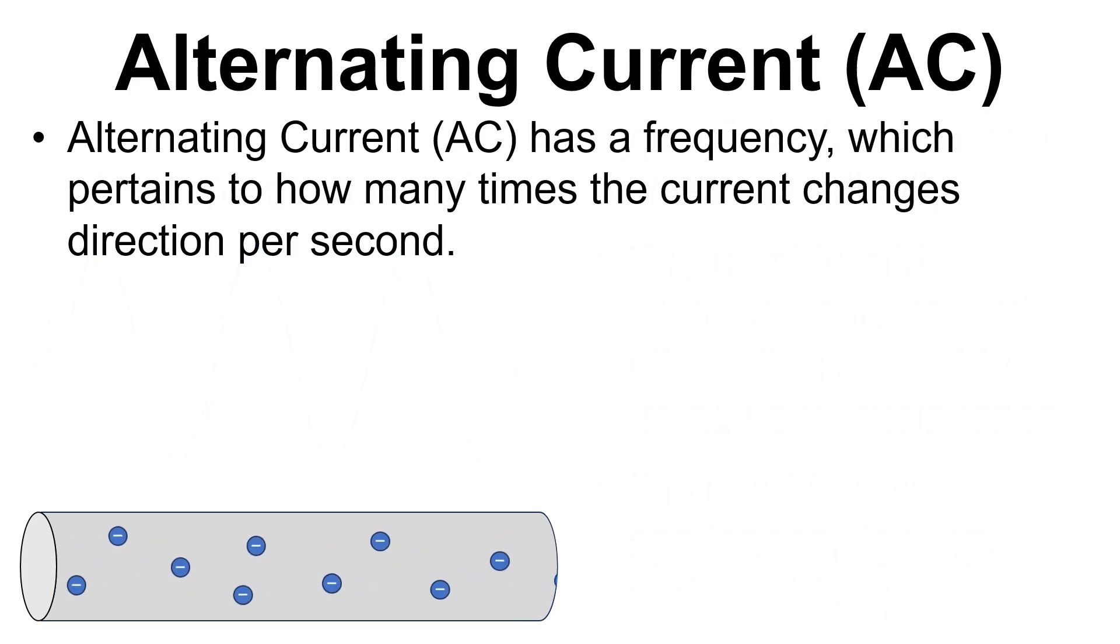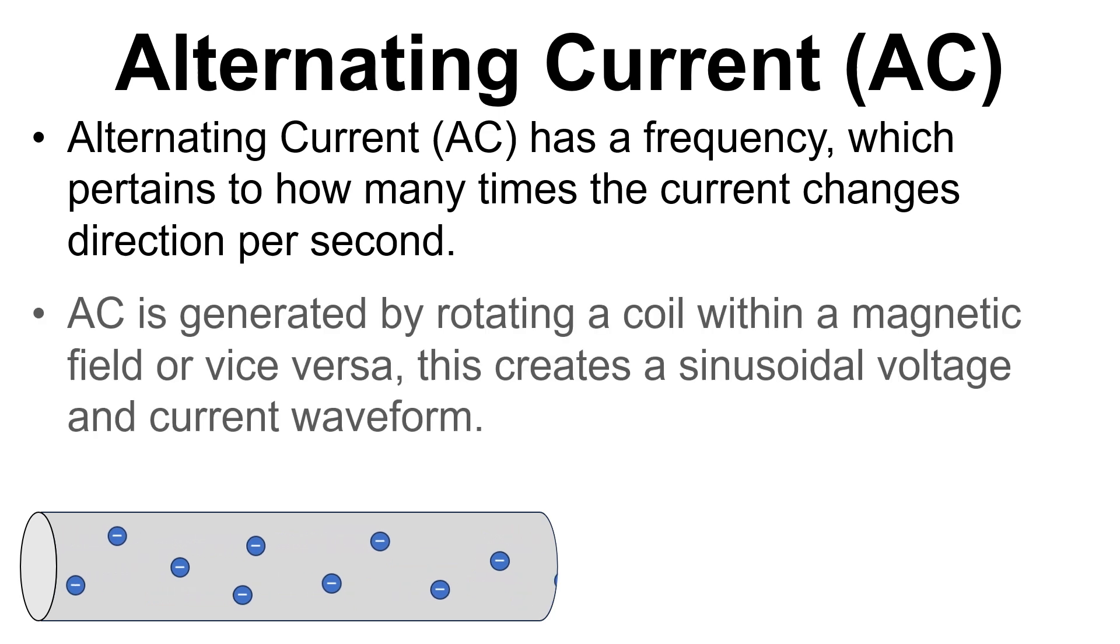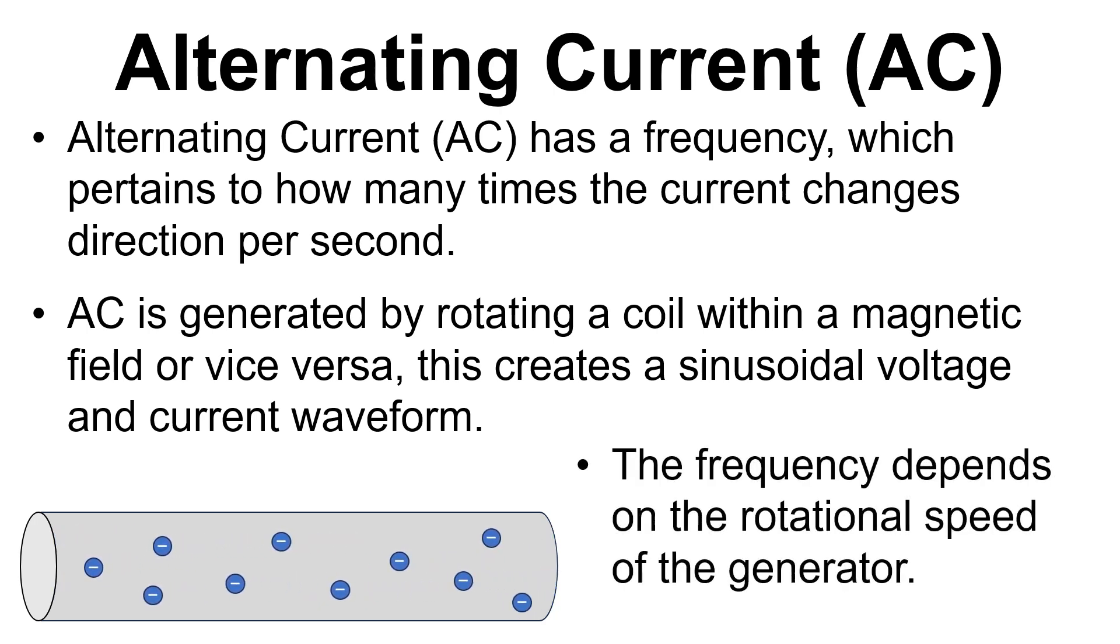Alternating current has a frequency which is based on how many times the current changes direction per second. AC is generated by rotating a coil within a magnetic field or vice versa. This creates a sinusoidal voltage and current waveform. Now the frequency of the AC depends on the rotational speed of the generator.